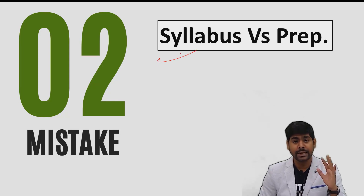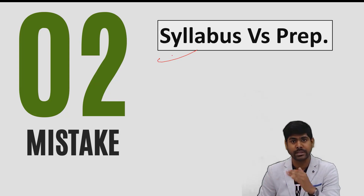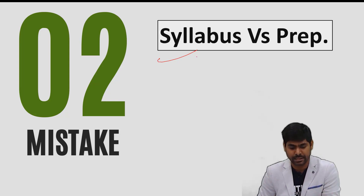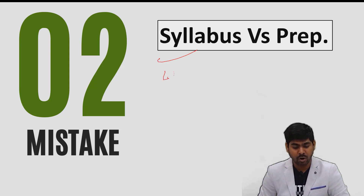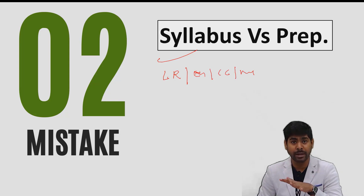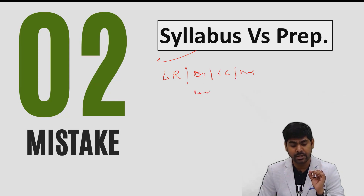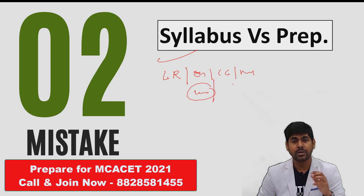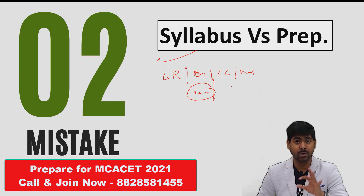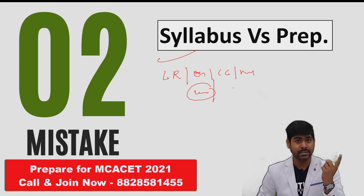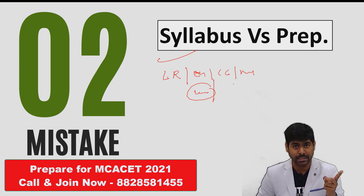The second mistake is that people are not aware of the syllabus in detail. They don't know the syllabus properly and because of that they prepare the wrong topics — topics which won't even come in the exam. You should be clear about all the topics of each section: Logic, LR, English, Computer concepts, or Math — which topics come and what their weightage is. In our first class only, we brief you about the detailed syllabus and its weightage.